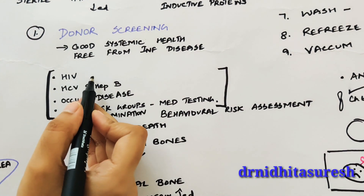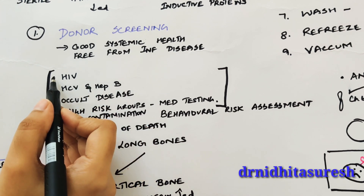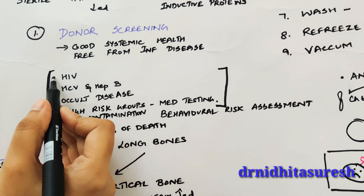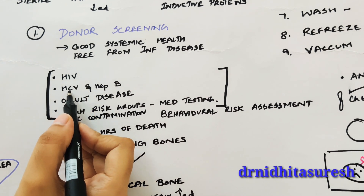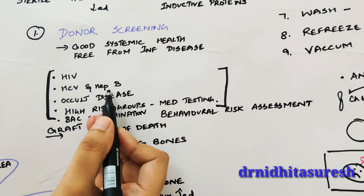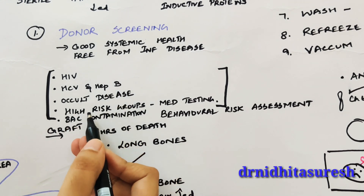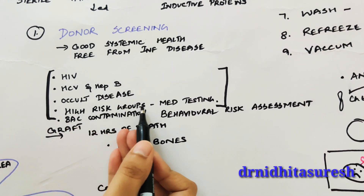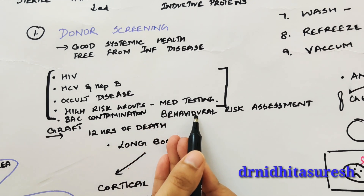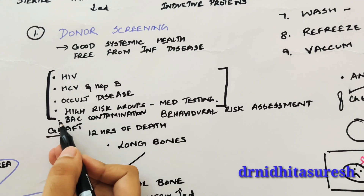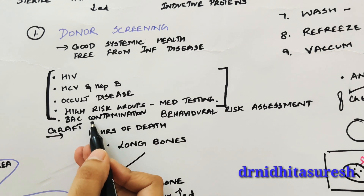Contraindications for bone tissue donation include: any donor testing positive for HIV, hepatitis C, or hepatitis B virus; donors with occult disease or under high-risk groups after medical testing and behavioral risk assessment — for example, evidence of drug use — and those positive for bacterial contamination.